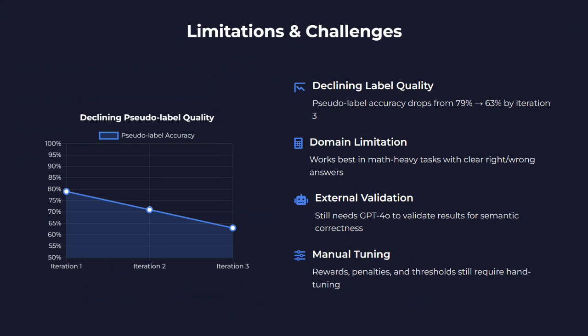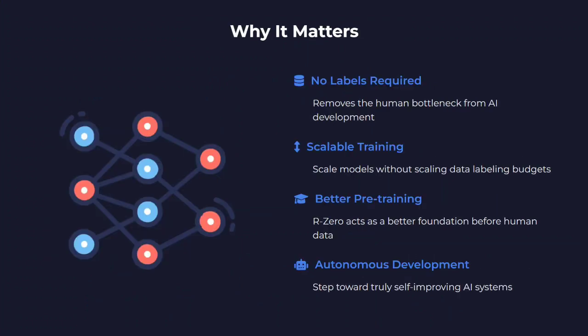There are limitations and challenges. Declining label quality is one — pseudo-label accuracy drops from 79% to 63% by iteration three. Domain limitation: it works best with maths only for now. External validation still needs models like GPT-4o to validate results, and manual tuning for defining rewards and penalties is required. However, why it matters most: no labels are required, which is critical because gathering data is the biggest challenge when training large models like LLMs. It also enables scalable training without scaling data labeling budgets.